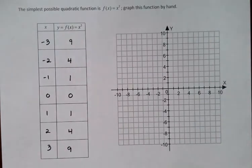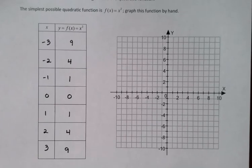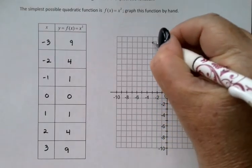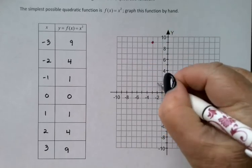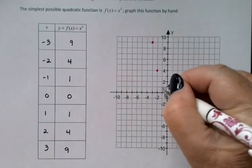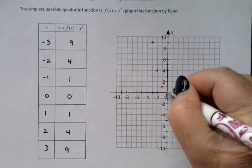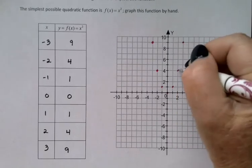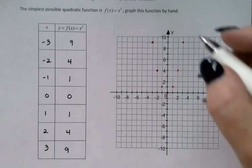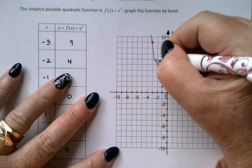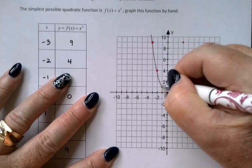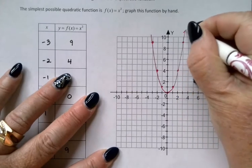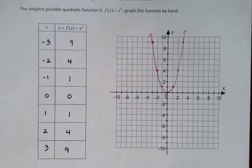Let's graph our function. Negative 3, 9 is my first point. I'm just going to plot that and continue on to negative 2, 4, and so on, just graphing all the points from this table. And what I see is this kind of a U-shaped thing happening here. Keeps on going up forever on both ends.